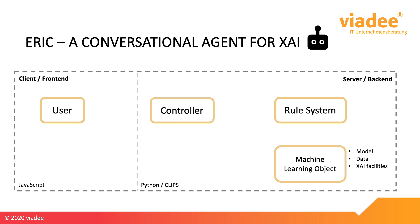So maybe you have wondered how the ERIC agent actually works — what technology performs the user dialogue and the selection of appropriate explanations. ERIC is built as a server-client application where the user interacts with a JavaScript frontend, the one you just saw in the demo. When entering a message into ERIC — for example the why question — the client sends a message to the controller, which is a Python program in the backend server and the interface for communication between the user and the main program. The controller then turns the message into a so-called fact, because ERIC holds a rule-based system — some might also say an expert system — that is programmed in a logical language called CLIPS.